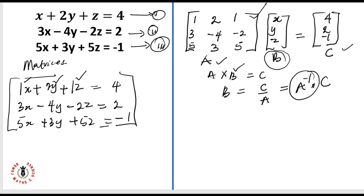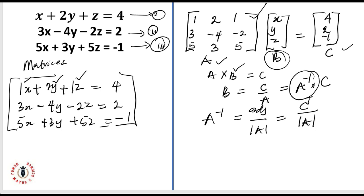If you missed our lesson on how to find the inverse of a matrix, please see the link in the description below. The inverse of matrix A is the same thing as the adjunct of that matrix divided by its determinant. At the same time, the adjunct of a matrix is the same as the transpose of its cofactor, so the inverse of a matrix is the transpose of its cofactor divided by its determinant. Let's look at matrix A and find its cofactors.